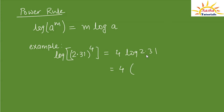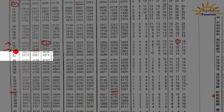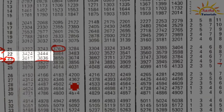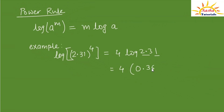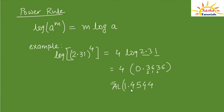The characteristic value of 2.31 is 0 as it is a single digit number. Log of 23 in the 1st column is 3636. Multiplying 0.3636 by 4: 6×4 is 24 carry 2; 3×4 is 12 plus 2 is 14 carry 1; 6×4 is 24 plus 1 is 25 carry 2; 3×4 is 12 plus 2 is 14. So 4 × log of 2.31 gives 1.4544.